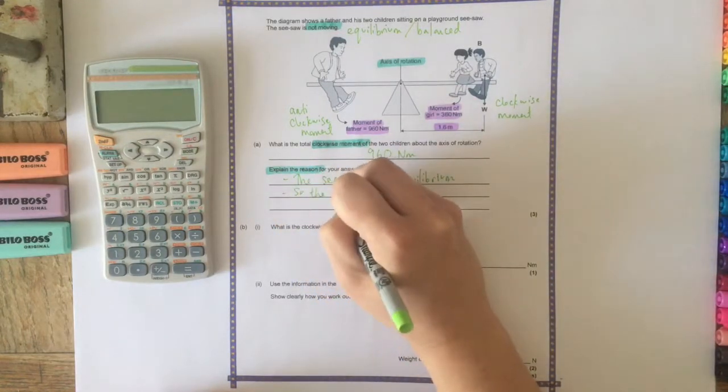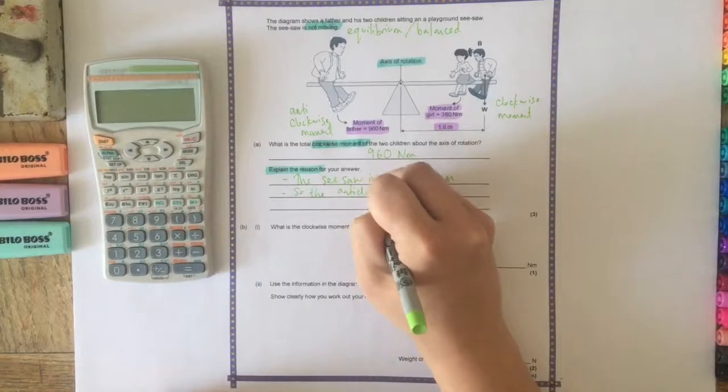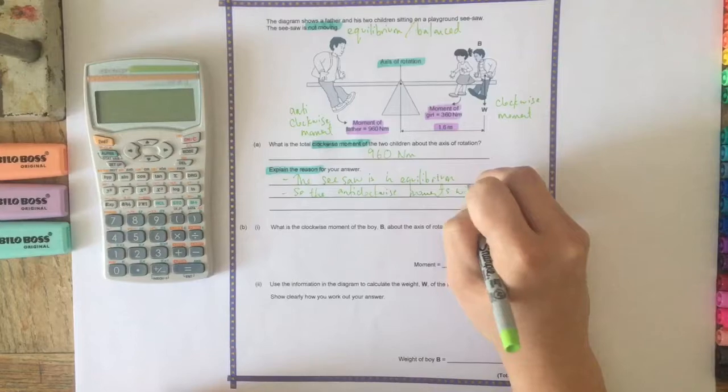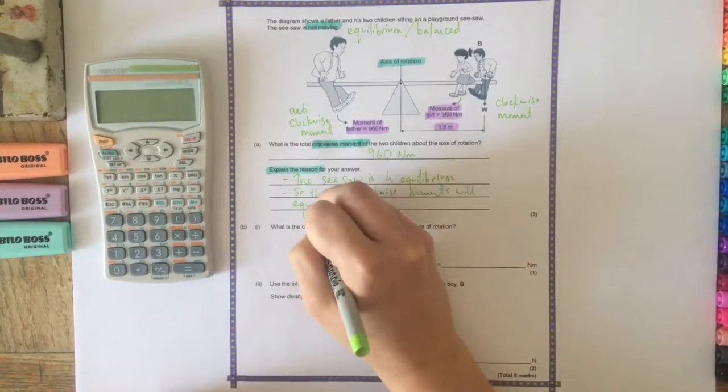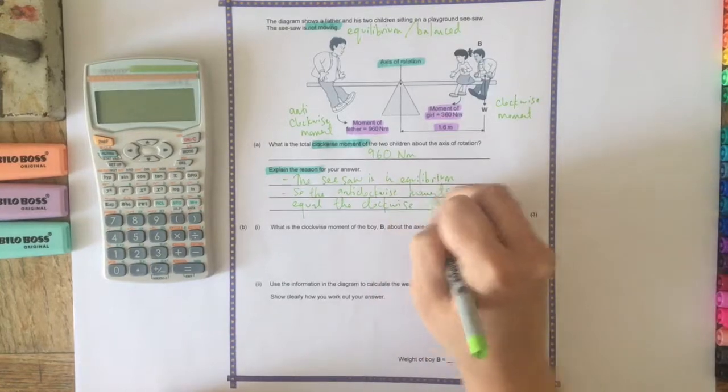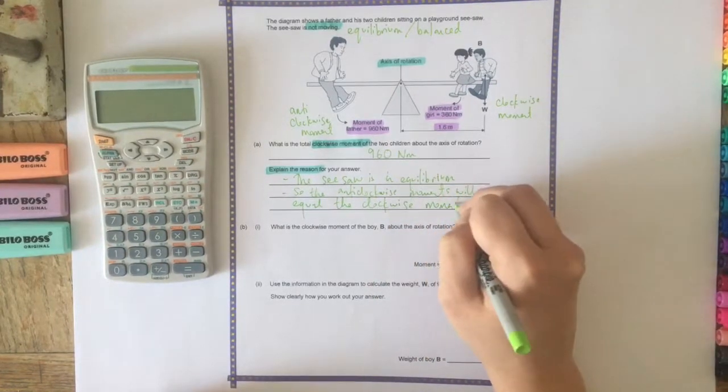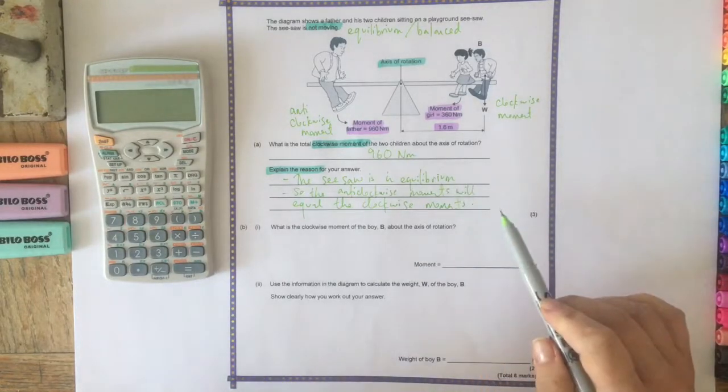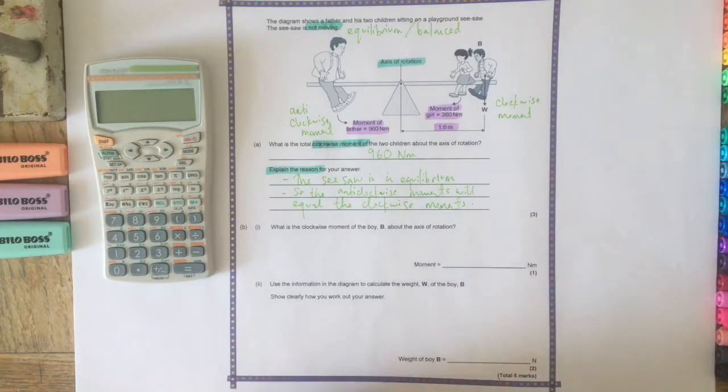You could say balanced, but equilibrium is a better kind of scientific terminology to use. So the seesaw is in equilibrium, so the anti-clockwise moments will equal the clockwise moments. Don't say they'll be the same because it's just not specific enough. It's always more useful to actually give as clear an answer as possible.